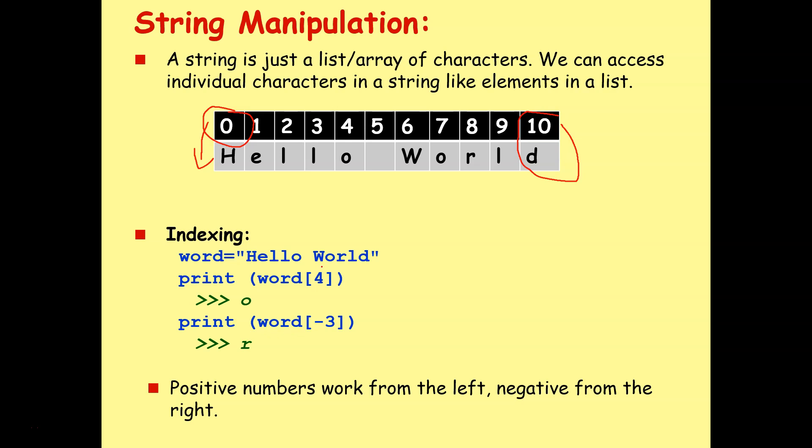So I can use that to print out individual characters from a string. Again, if word is a phrase hello world, and I say print word and then 4 in square brackets to give the index position 4, that will print O, because index position 4 is O. If I say print word minus 3, it will still print out a character, but it will do it from backwards. So for example, that is position 0, minus 1, minus 2, minus 3, and that gives us R. So positive numbers work from the left, negative numbers from the right, and you can print all kinds of different characters from your text string.